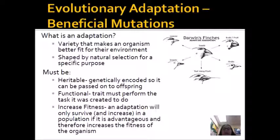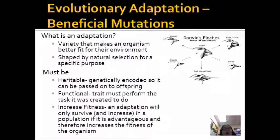An adaptation is a beneficial mutation. It's a gene sequence that leads to a protein that leads to a trait that makes an organism better fit for its environment, which means it increases its likelihood to survive long enough to reproduce. Any structure that allows an organism to have a survival advantage is considered an adaptation. Adaptations all depend on the environment — one structure could be beneficial in one environment and harmful in another. One example is sickle cell anemia in humans.